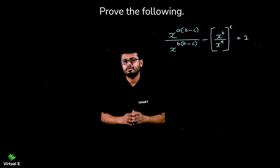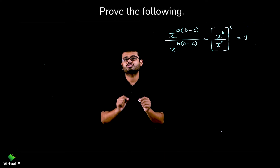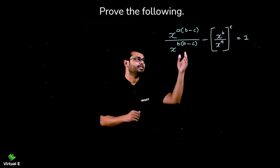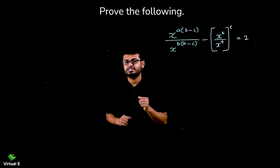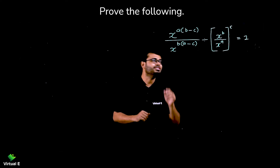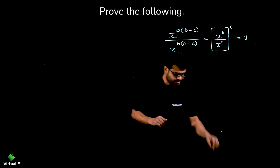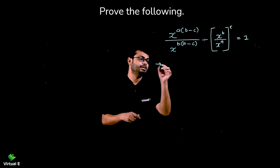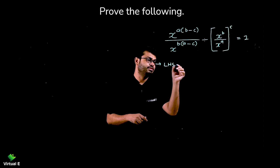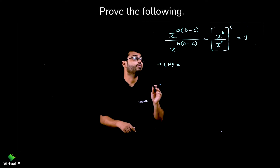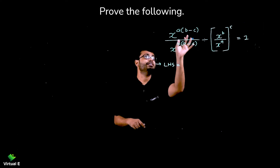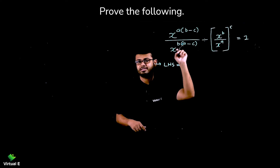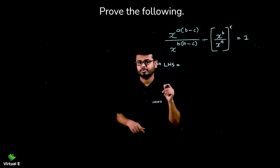Now let's discuss important problems related to laws of exponents. We are supposed to simplify this one and prove that if we simplify it, we are going to get the answer 1. So let's start with the LHS. How we are going to approach: first of all, you can see in this term X raise to A into bracket B minus C. So let's apply the distributive property first.